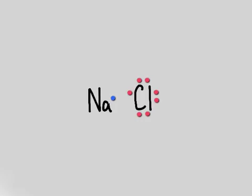I've drawn the Lewis structures here for sodium and chlorine, and we can see that sodium has one valence electron, and chlorine has seven valence electrons.